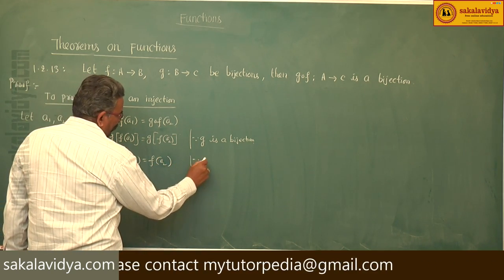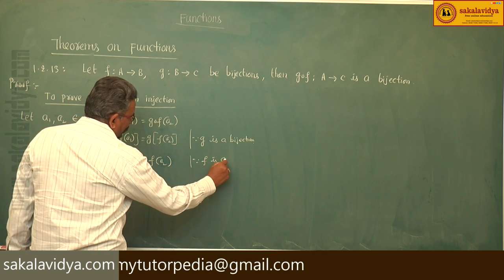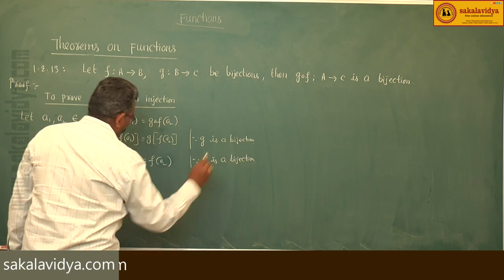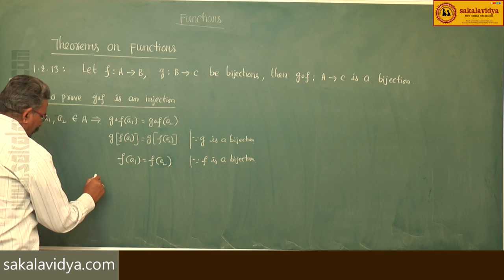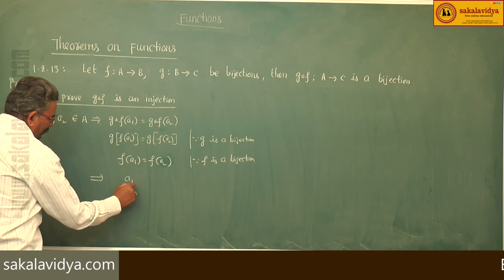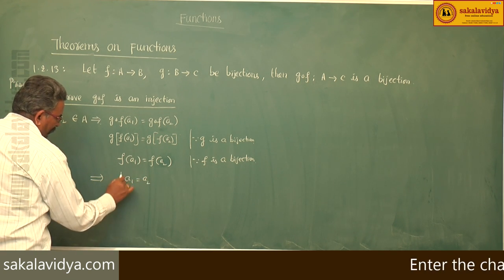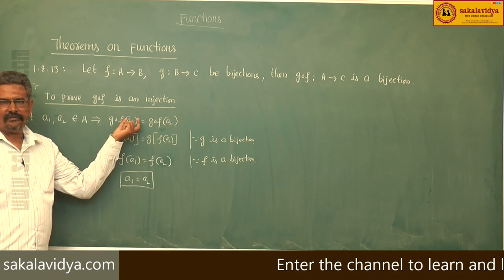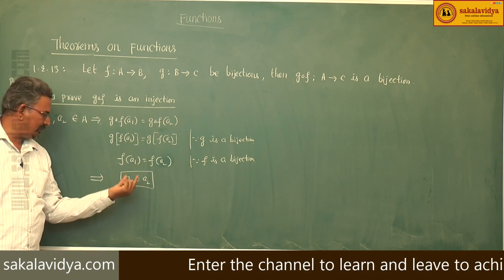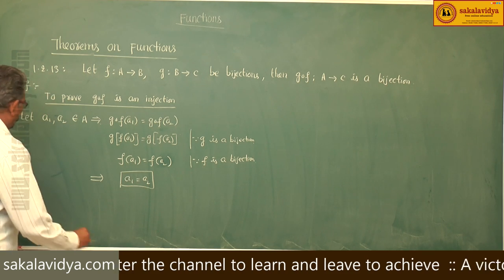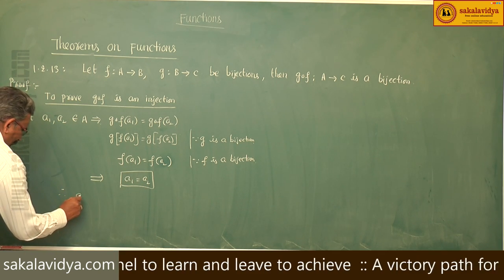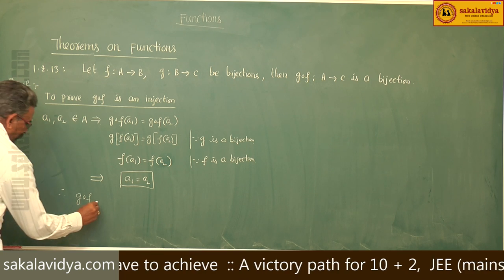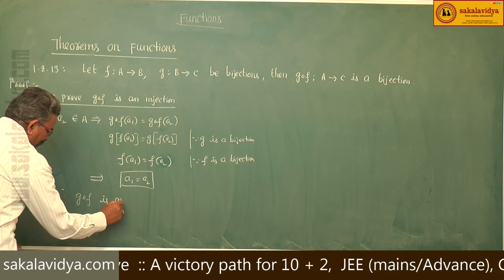Since f is a bijection, that implies a1 = a2. So if g∘f(a1) = g∘f(a2), then a1 = a2. Therefore, g∘f is an injection.